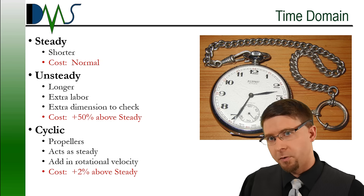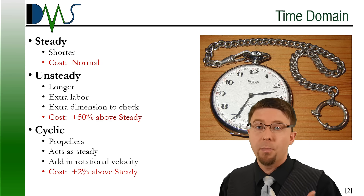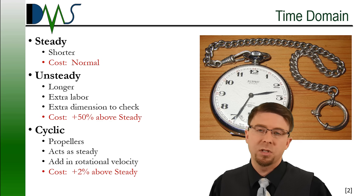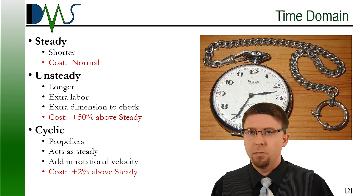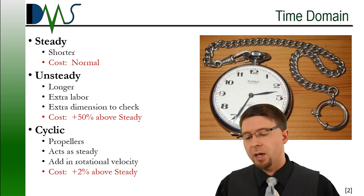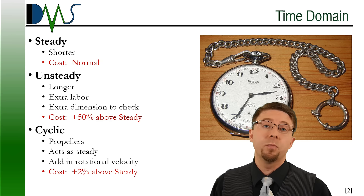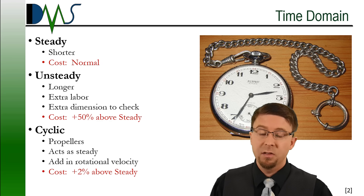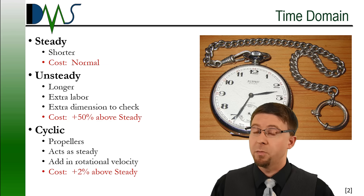There's also a third option that a lot of people don't think about: cyclic time domain. This happens for things on a repetitive cycle — propellers, engines, turbines. In these cases, we can use cyclic motion where the simulation itself doesn't actually vary with time. We take the net effect of that rotational motion and apply it as an additional velocity term into the simulation. You don't have to deal with unsteady effects — it just gets added in as its own extra velocity. That's not much extra cost over a steady simulation, so be sure to ask about that if you're dealing with something rotating.